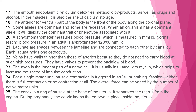Explanation 19: Some alleles are dominant and some are recessive. When an organism has a dominant allele, it will display the dominant trait or phenotype associated with it. Explanation 20: A sphygmomanometer measures blood pressure in mmHg. Normal resting blood pressure in an adult is approximately 120 over 80 mmHg.